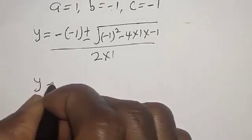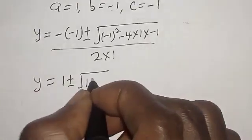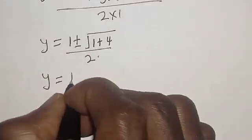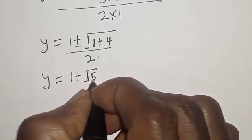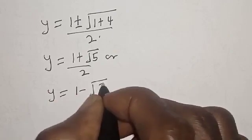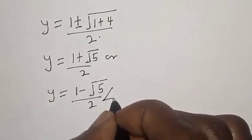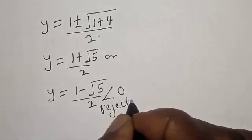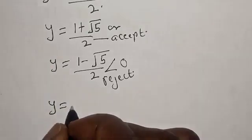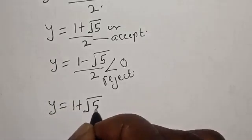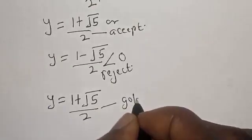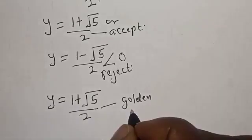Now y is equal to 1 plus or minus square root of 1 plus 4, over 2. So y equals 1 plus square root of 5 over 2, or y equals 1 minus square root of 5 over 2, and this second solution is less than 0. So y is equal to 1 plus square root of 5 over 2. This is called the golden ratio.